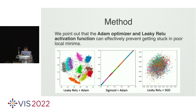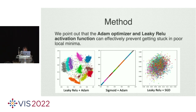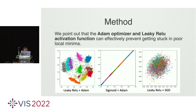T-SNE is a non-parametric method. The advantage is high flexibility to determine the position in low-dimensional space. However, this kind of method lacks generalization — once you get the transformation from a given dataset, you cannot use it to reduce the dimensionality of new data. Hence, our goal is to extend T-SNE from non-parametric to parametric by training a neural network, where the input is high-dimensional data, the output is low-dimensional data, and the loss function is KL divergence. The advantage of parametric T-SNE is that it can reduce the dimensionality of unseen data, which is beneficial for streaming data visualization.